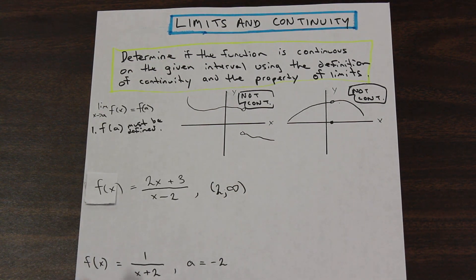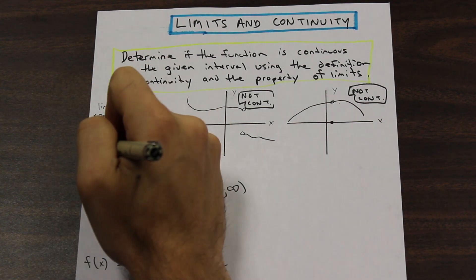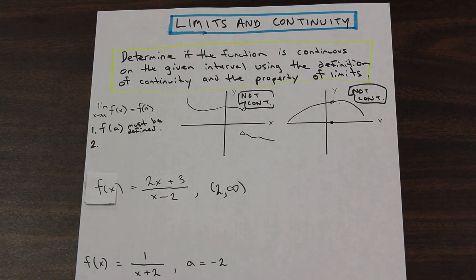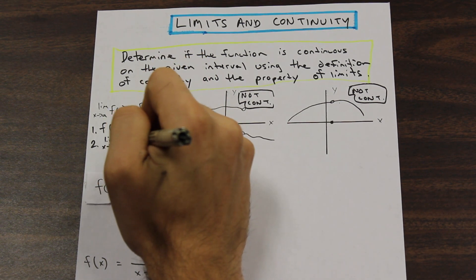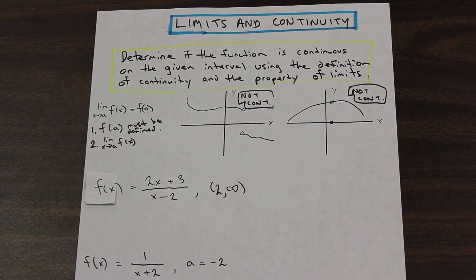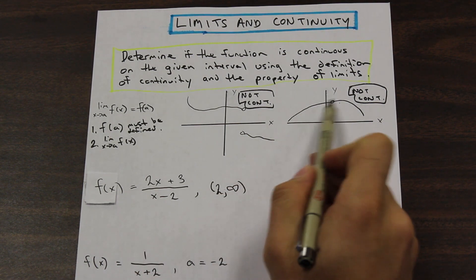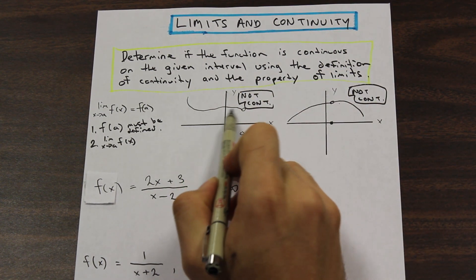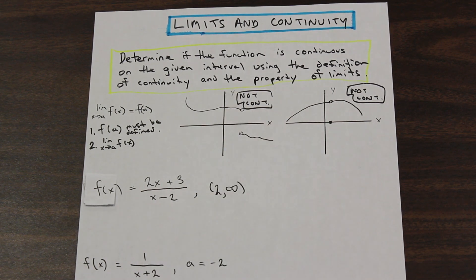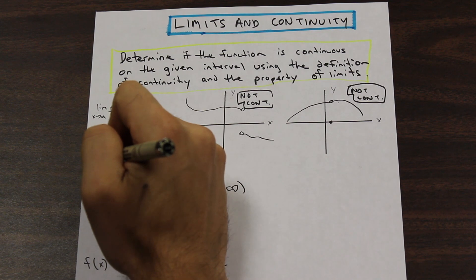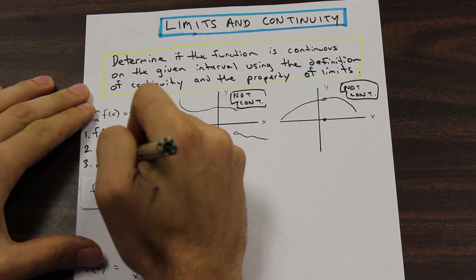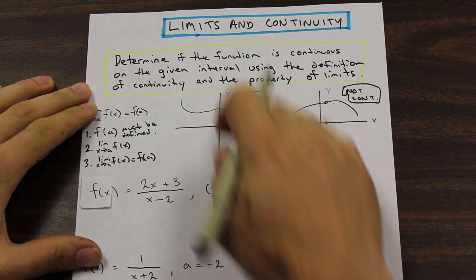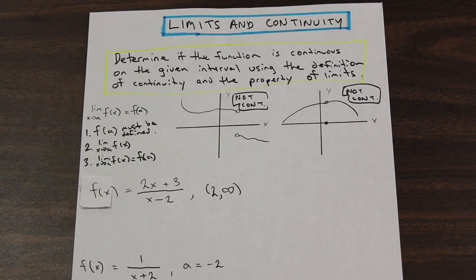The second condition that must be met for the function to be continuous is that the limit as x approaches a of f(x) must exist. That means it must be defined and must also be the same from the left and the right. If we take the limit approaching from the left and the right and get two different values of y, that implies the function is not continuous. The third condition is that the limit as x approaches a of f(x) must equal f(a).